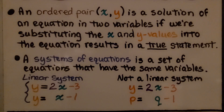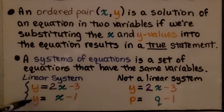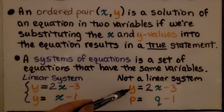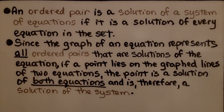A system of equations is a set of equations that have the same variables. So this would be a linear system or system of equations — they both have y and x. This is not a linear system: one equation has y and x, but the other has p and q, so that's not a system of equations. An ordered pair is a solution of a system of equations if it is a solution of every equation in the set.